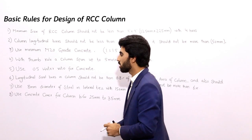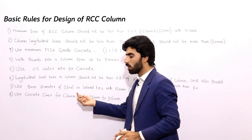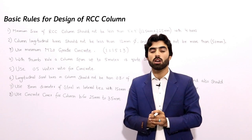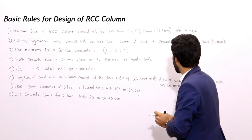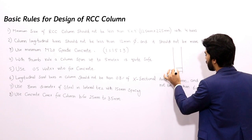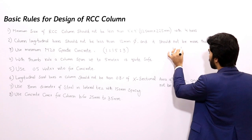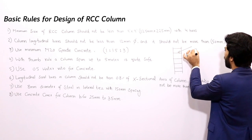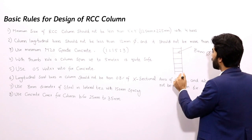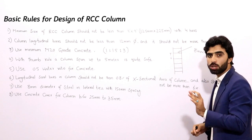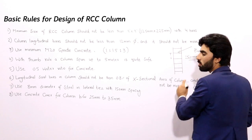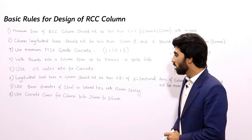The seventh rule: use 8 mm diameter steel bars for lateral ties, with a spacing of 150 mm between two lateral ties. So the lateral tie diameter should be 8 mm and the spacing between lateral ties in the column should be 150 mm.